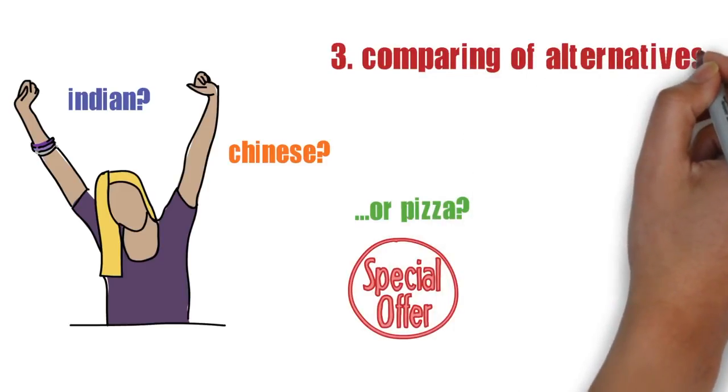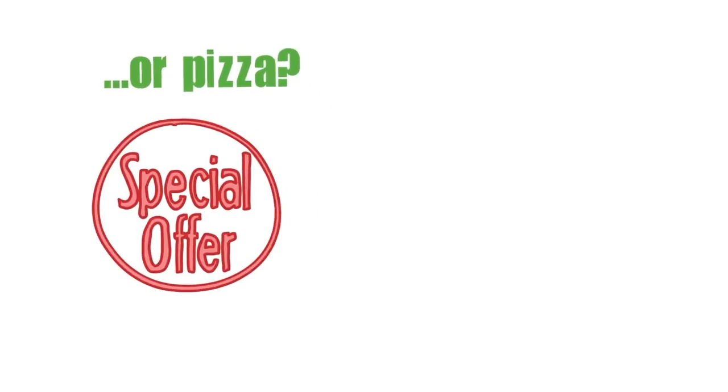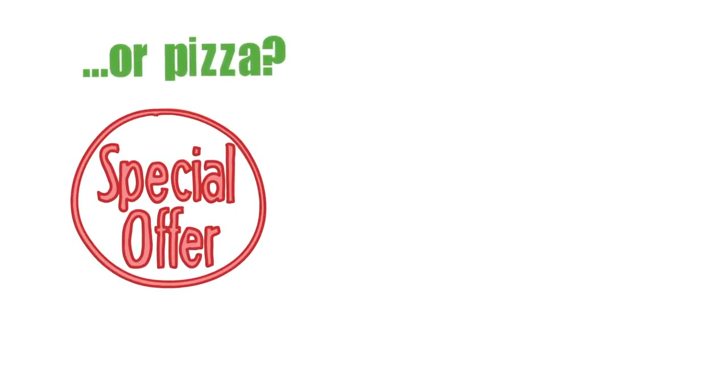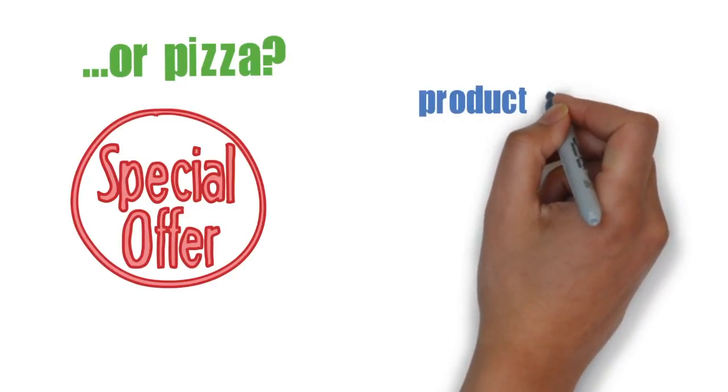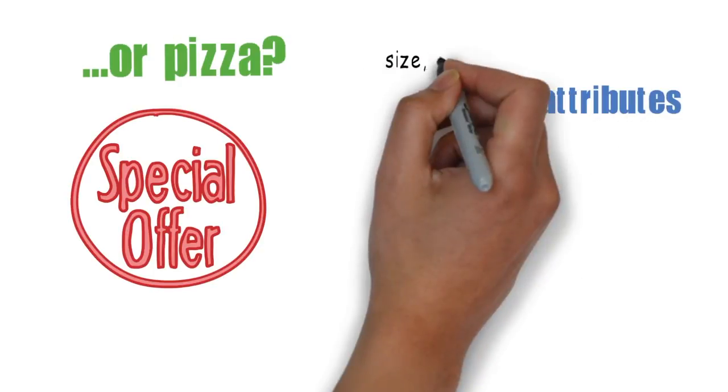This is the third step of the process where consumers compare alternative options in order to make a decision. This stage is considered to be the most important stage during the whole consumer decision-making process. In this stage consumers analyze all information obtained. They consider various alternative products and services and compare them in order to make the right choice that corresponds to their particular needs and wants.